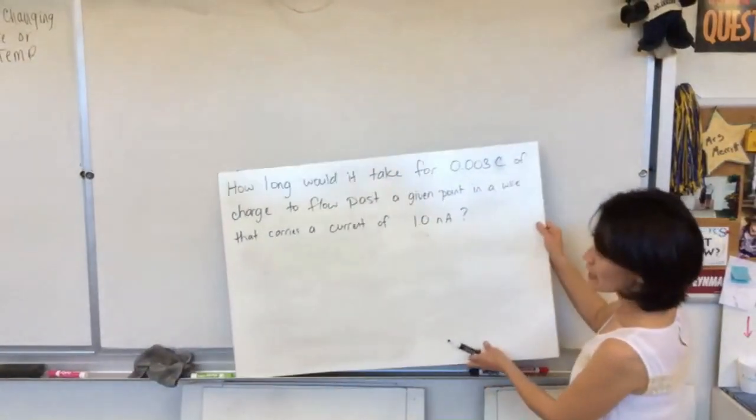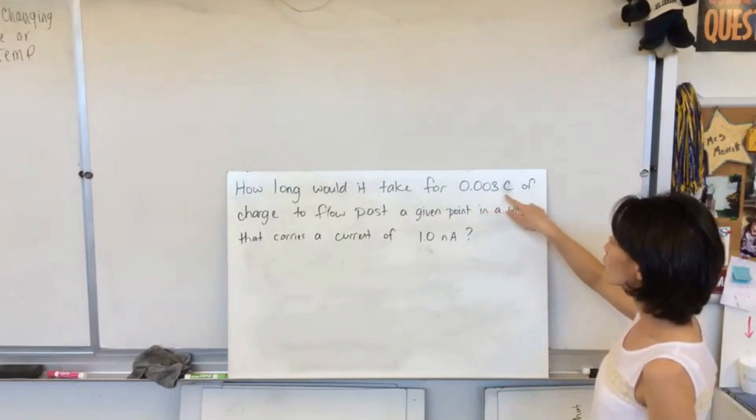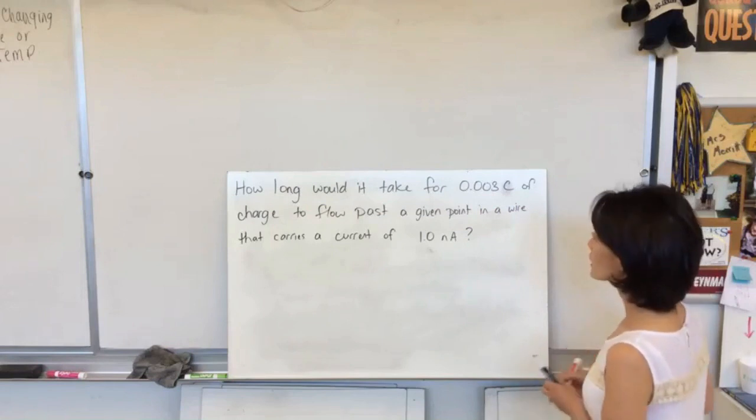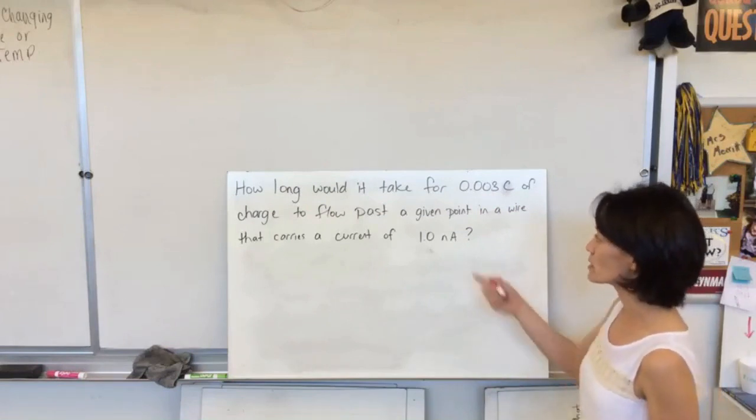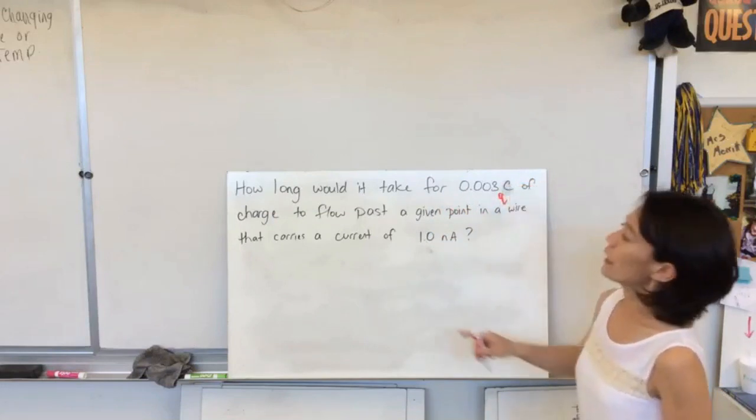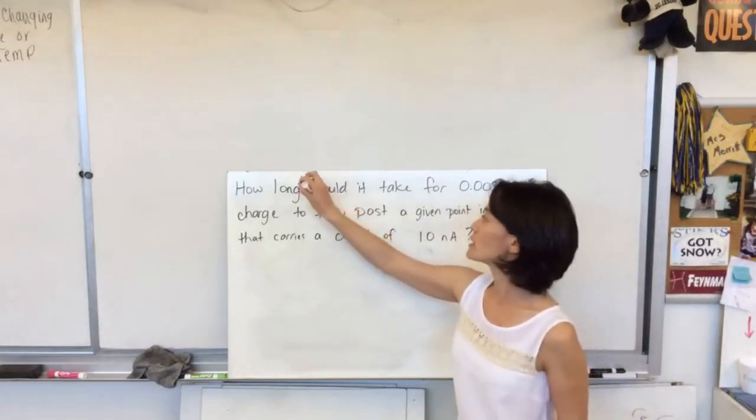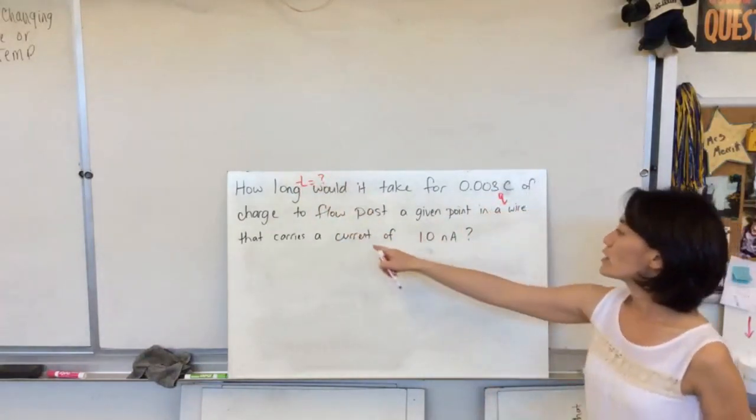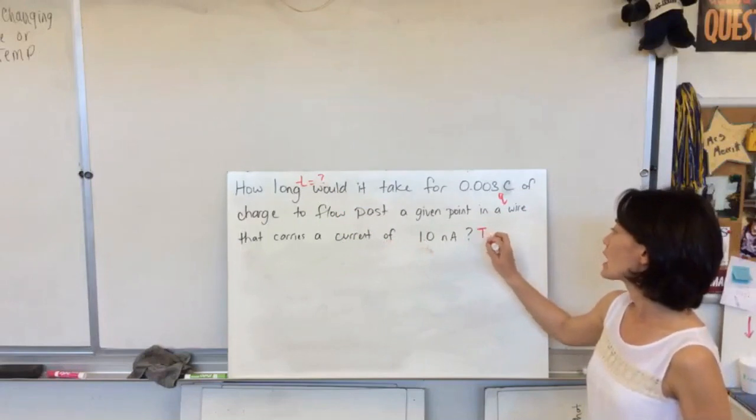So this problem says, how long would it take for 0.003 coulombs of charge to flow past a given point in a wire that carries a current of 1 nanoamp. So in looking at the quantities that this problem gives us, 0.003 coulombs is q. And we're looking for how long, so we're looking for what is the time. That carries a current of 1 nanoamp. So that is my I value.